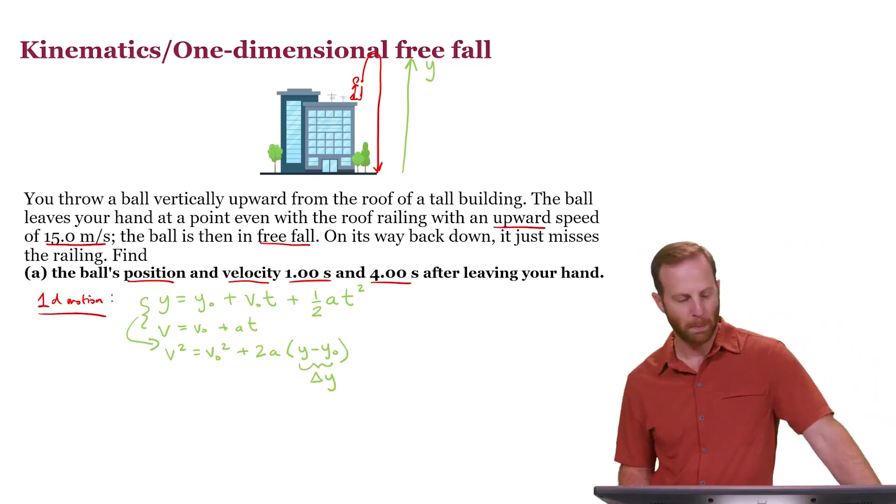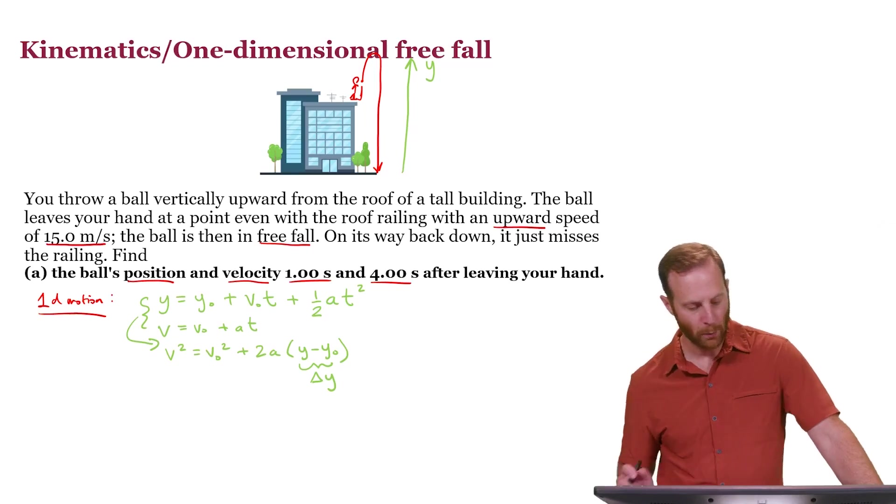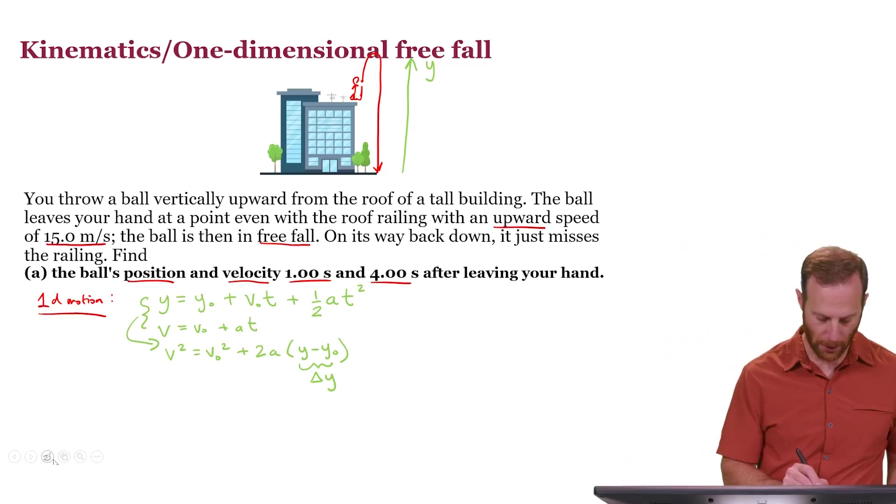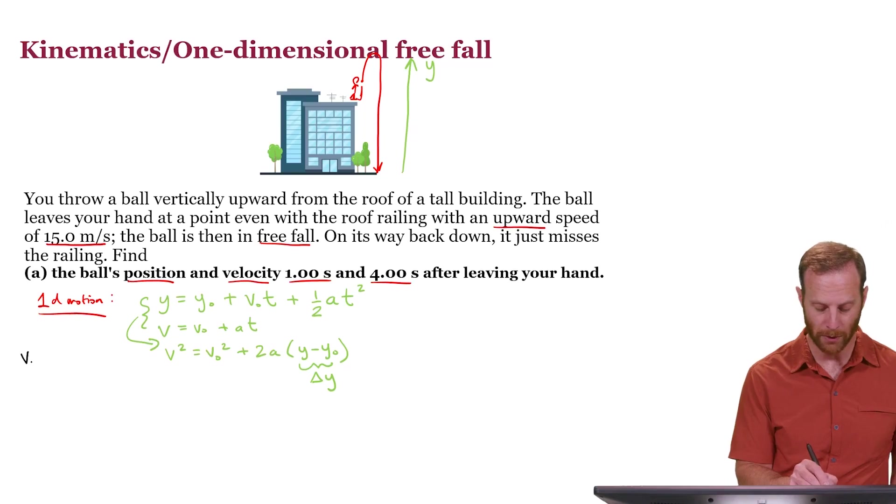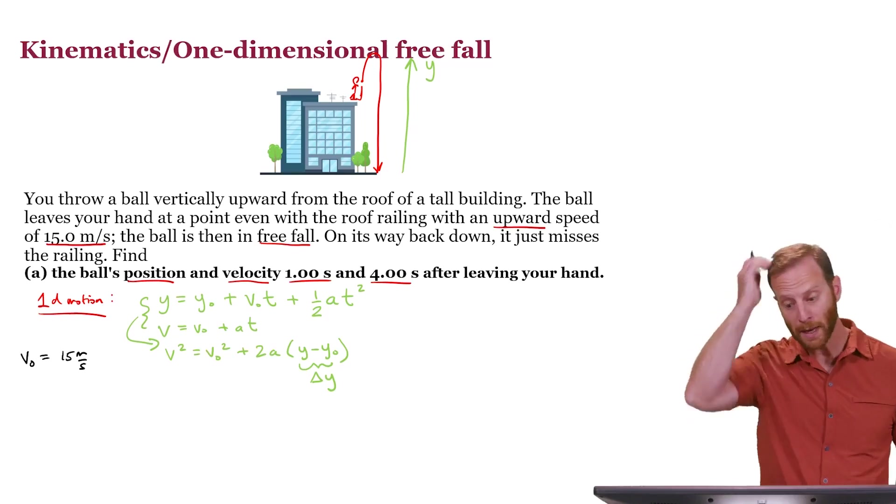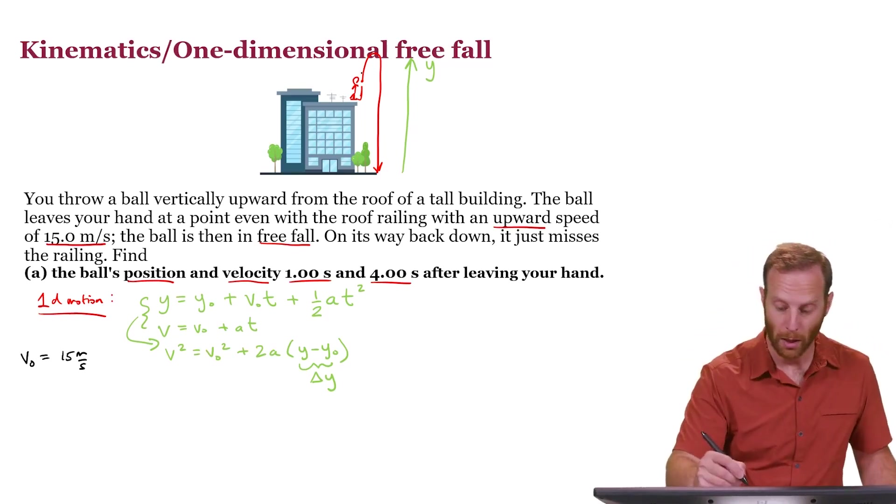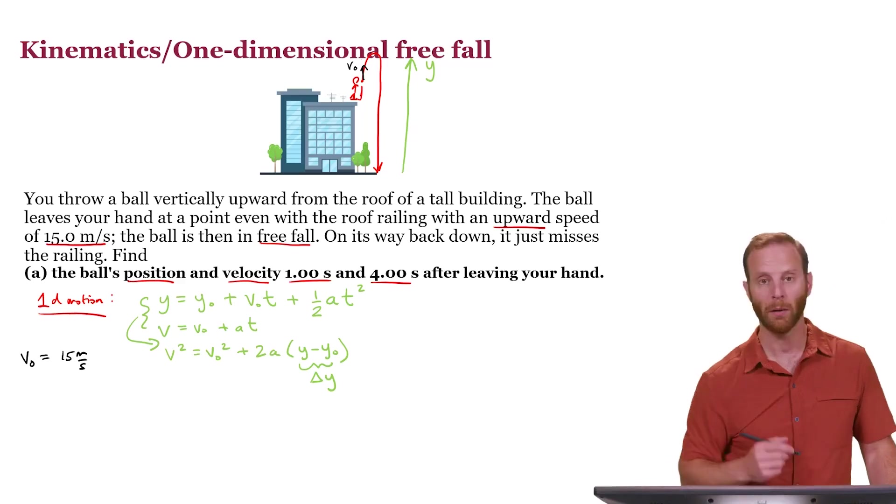So in this first part of the problem, part A, we should make a list of the things that are known and the things that we want. We are told the initial speed is 15 meters per second going up. That means that v0 is equal to 15 meters per second. Notice that this is a positive number indicating that the velocity is originally on its way up. I can draw a little arrow. The initial velocity going up like that.